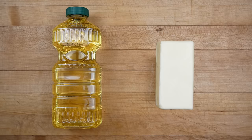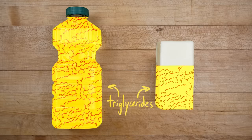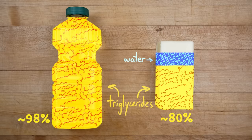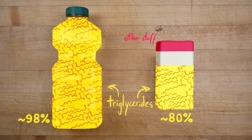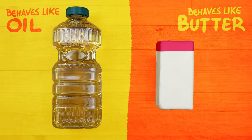It basically boils down to what they're made of. Butter and oil both consist mostly of super-common fat molecules called triglycerides. But while many cooking oils consist almost exclusively of these fat molecules, butter contains more other compounds as well — water, which evaporates before the butter is hot enough to cook in, but also proteins, sugars, enzymes, and so-called free fatty acids: the building blocks of fats that aren't bound up in fat molecules. And it's this extra stuff that makes butter behave differently than oil when you're cooking.